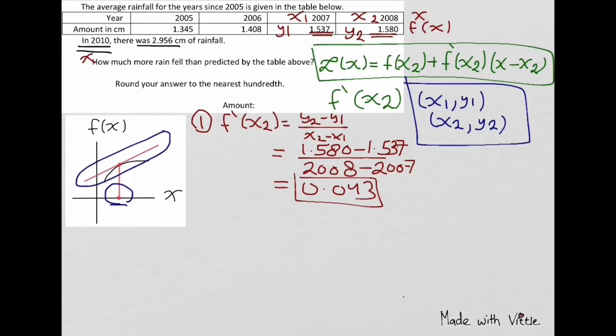The second step is to substitute the given values into our previous formula. The given values are: f of x2 equals 1.580, derivative of f of x2 equals 0.043, x equals 2010, and x2 equals 2008.